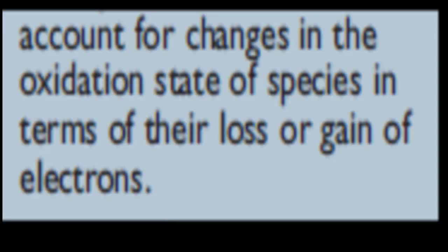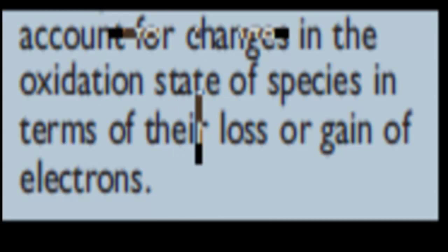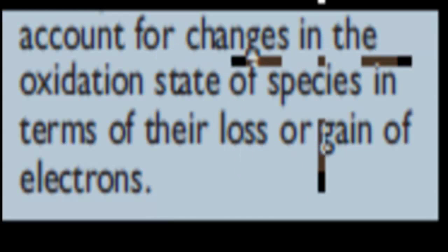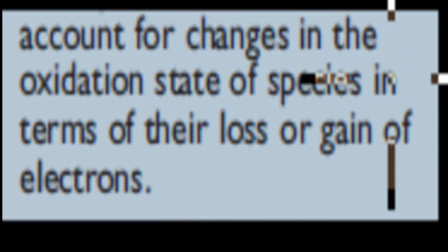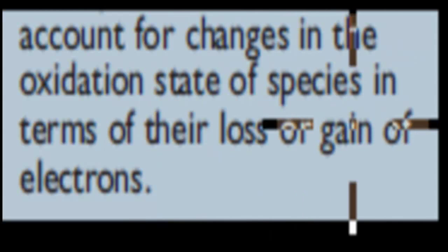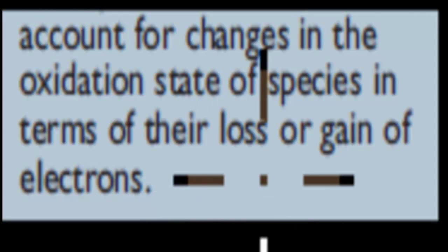Welcome back. In the last video, we talked about the activity of metals and how that determines which ions are displaced from solution. In this video, we're going to talk about the next dot point, which says: account for the changes in the oxidation state of a species in terms of their loss or gain of electrons.